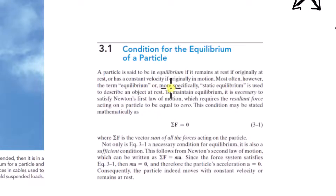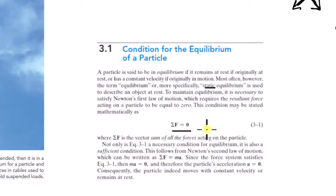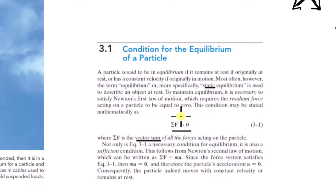Most often, the term equilibrium — meaning static equilibrium — is used to describe an object at rest. To maintain equilibrium, it is necessary to satisfy Newton's first law of motion. The equilibrium equations, the sum of forces equal to zero, are applying Newton's second law: the sum of forces equals MA and A equals zero. Newton's first law says an object at rest tends to stay at rest; this is more Newton's second law with acceleration equal to zero.